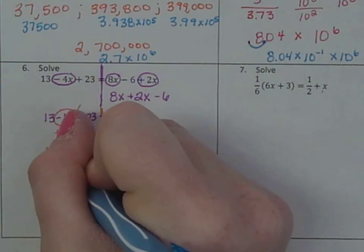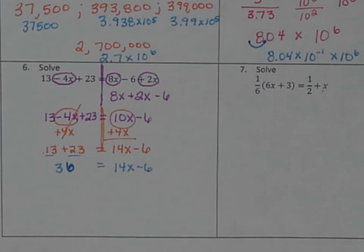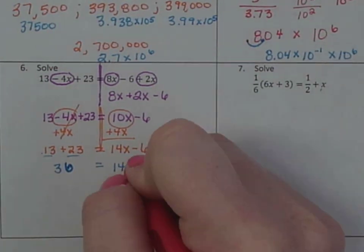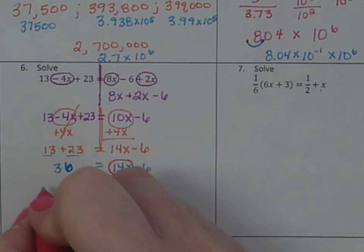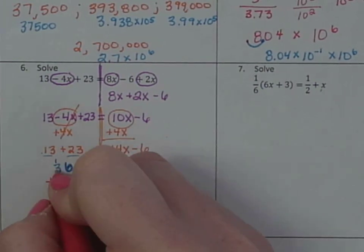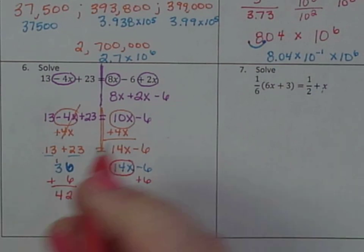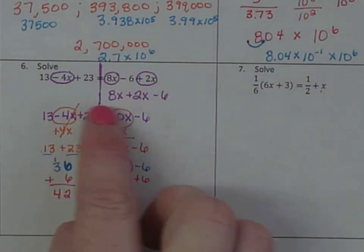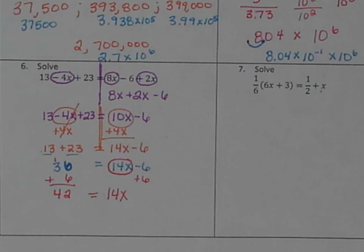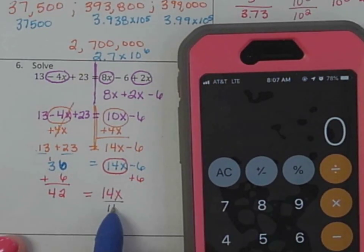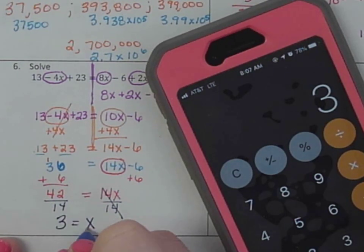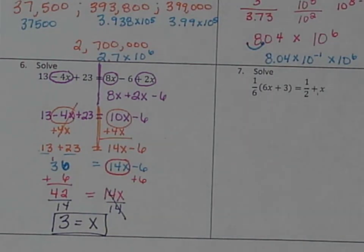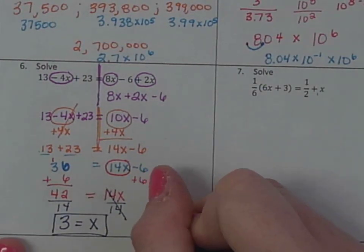Still have some more work to do. Opposite of subtract 6, because we're trying to get this by itself, is add. 6 plus 6 is 12, 3 plus 1 is 4. Bring down the equals. Bring down 14x. And of course, some of this could have been simplified by combining a little bit earlier, but it's just the same to just keep bringing it down. I just don't want to miss anything. So now divide by 14. 42 divided by 14 is 3 equals x. Or x equals 3.